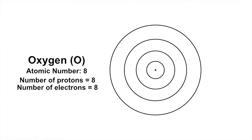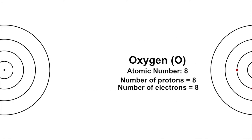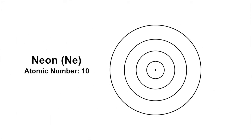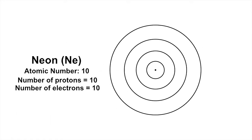Oxygen has eight electrons, two in the first shell and six in the second shell. Fluorine has nine electrons, two in the first shell and seven in the second shell. Neon has ten electrons, two in the first shell and eight in the second shell, which fills the second shell.